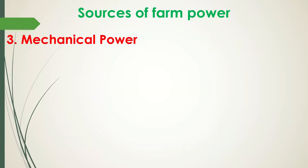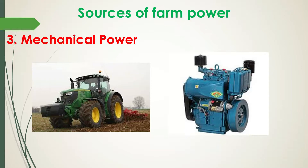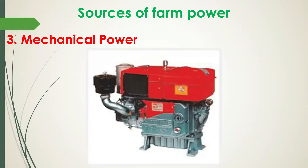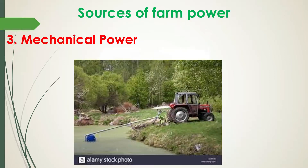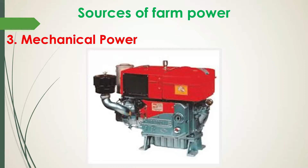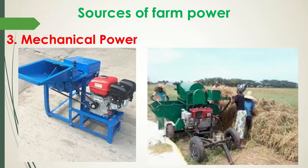The third important source of farm power is mechanical power, available through tractors and oil engines. The oil engine is a highly efficient device for converting fuel into useful work. The efficiency of diesel engines varies between 32 and 38%, whereas that of the carburetor engine is in the range of 25 to 32%. In recent years, diesel engines and tractors have gained considerable popularity in agricultural operations.